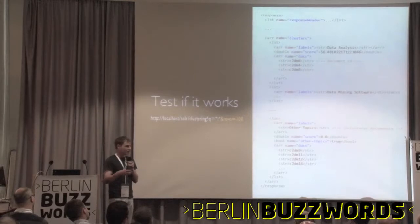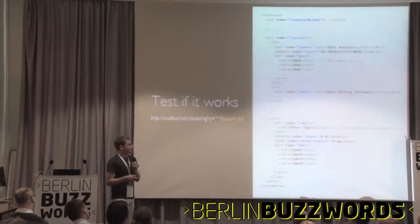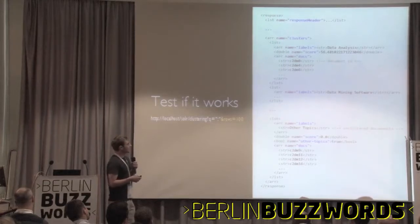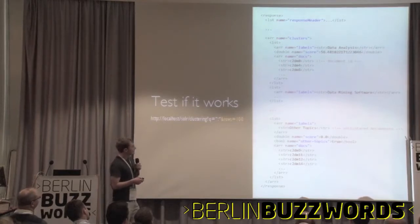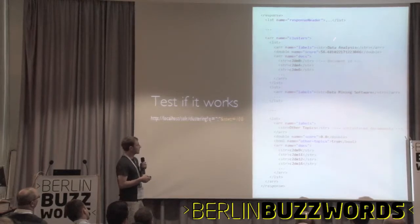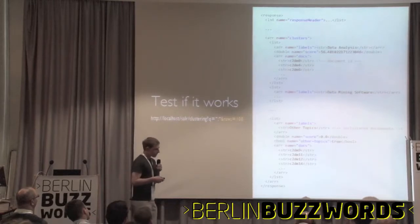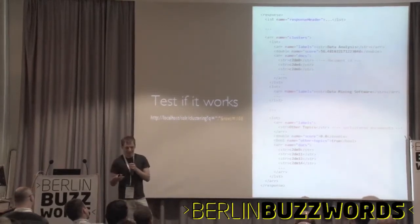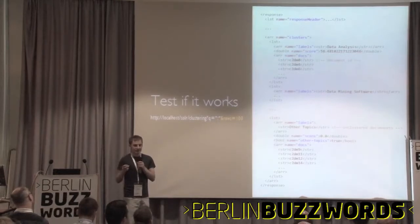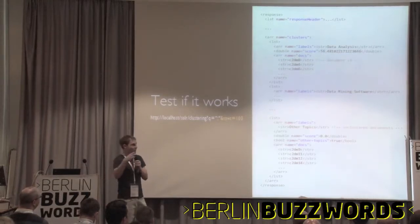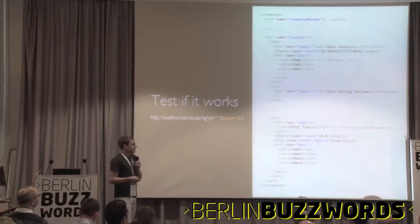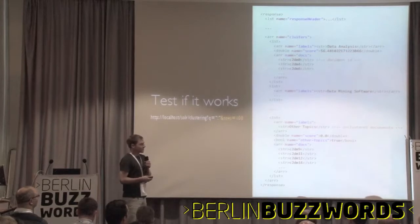100 results is ideal; 50 should work; 30 may or may not be fine depending on the content. If everything is configured correctly, you should see a new array in the results containing the clusters. For each cluster, you'll see a hopefully human-readable label, a list of document IDs that are members of the cluster, and a score. The score is algorithm-dependent and doesn't usually have an absolute meaning — a higher score means the algorithm thinks the cluster is better.